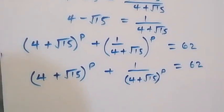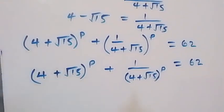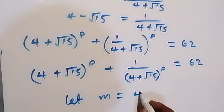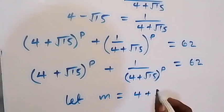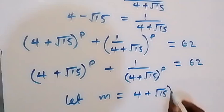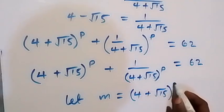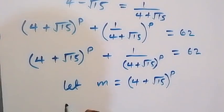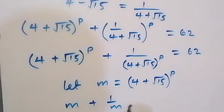Then, let m be equal to (4 plus root 15) raised to power p. This equation can now be written as m plus 1 over m equals to 62.